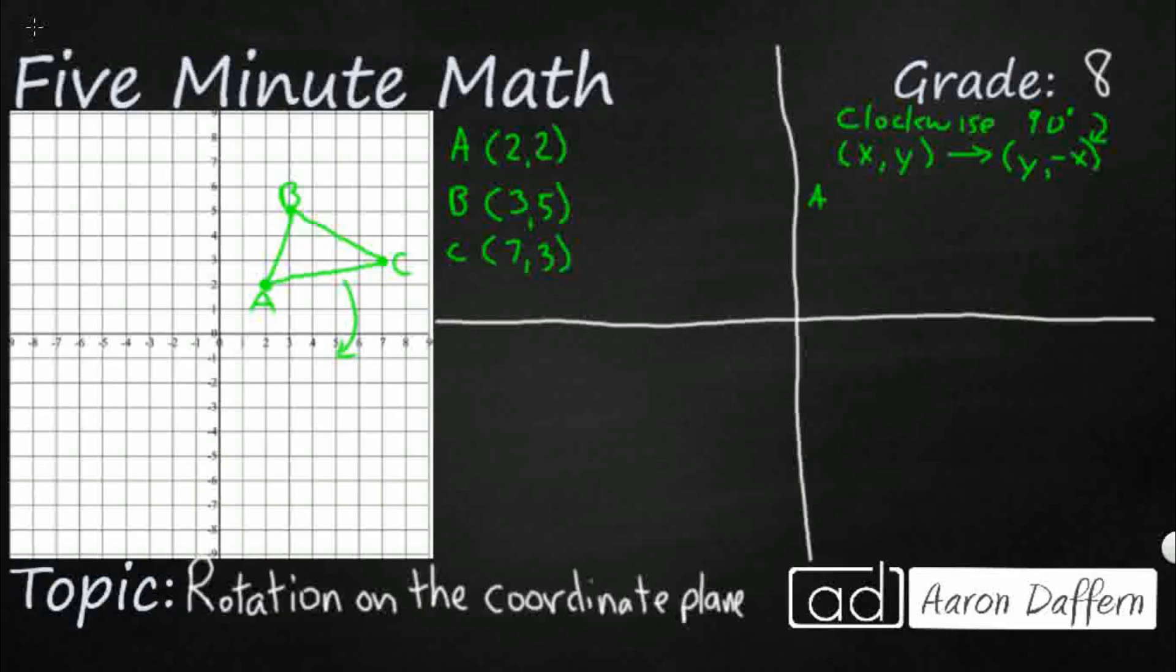So watch what happens here. So A is going to be 2, 2, right? So I'm going to transform that into A prime. I'm going to flip the y. It's now my x, which is still 2, but my x is now my y, but it's negative 2. So I'm going to take 2, negative 2, and I'm going to label it right here as A prime.